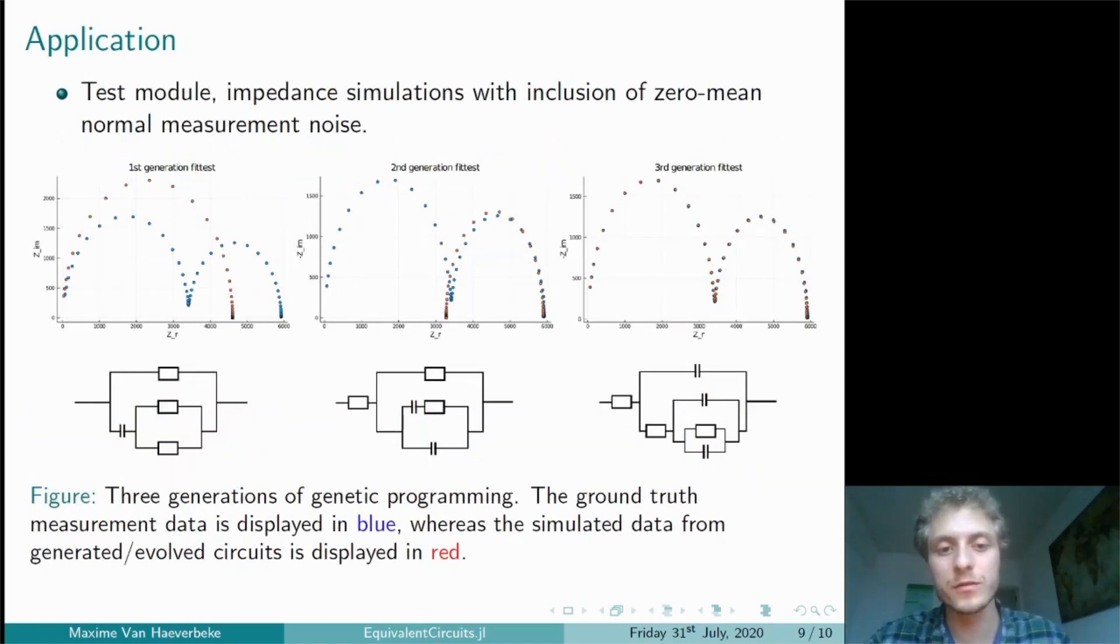In these figures, the blue curves represent the electrochemical impedance spectra of the ground truth circuit, and the red curves represent the simulated impedance spectra of the fittest individual for a given generation of genetic programming. We can see that after the first generation, the circuit already looks somewhat similar to the ground truth circuits from the previous slide.